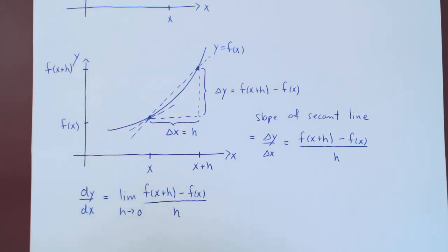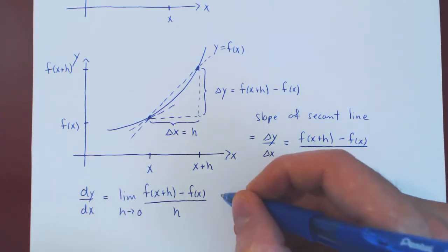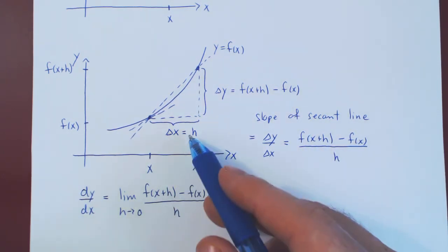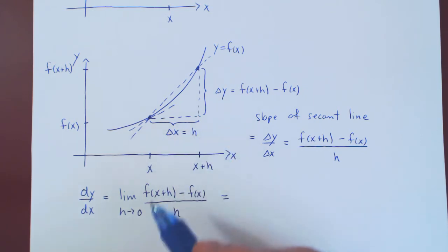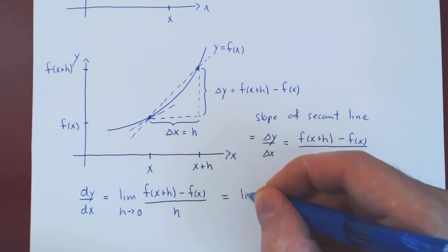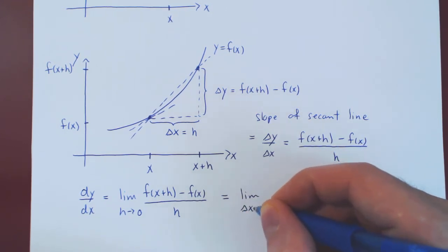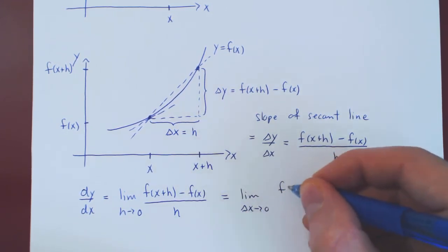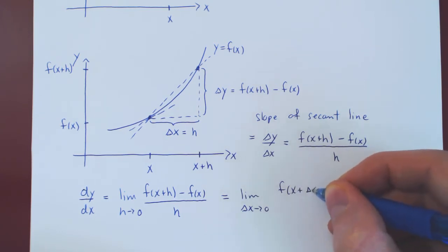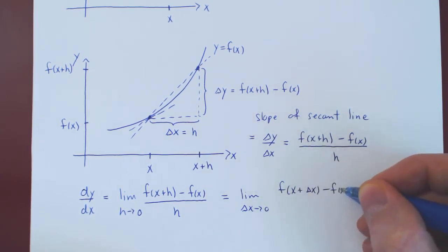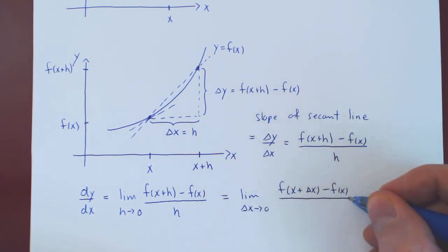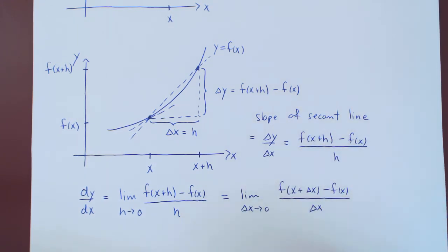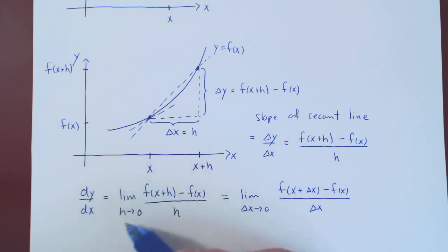And there you go — this is how you can find the derivative of any function. You may notice that our delta x is equal to h, so you may see sometimes h replaced by delta x, whichever you're more comfortable with. So: limit as delta x approaches 0 of f of x plus delta x, minus f of x, over delta x. Very simple, but a beautiful application of limits.